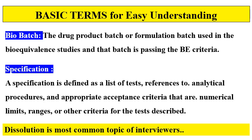Bio batch is the product batch used in bioequivalence studies where the batch passes the BE criteria — it is also called the BE batch or, in pharmaceutical industries, the pivotal batch. A specification is a list of tests referencing analytical procedures and appropriate acceptance criteria — numerical limits, ranges, or other criteria — essentially the range or value used for passing or failing a test.